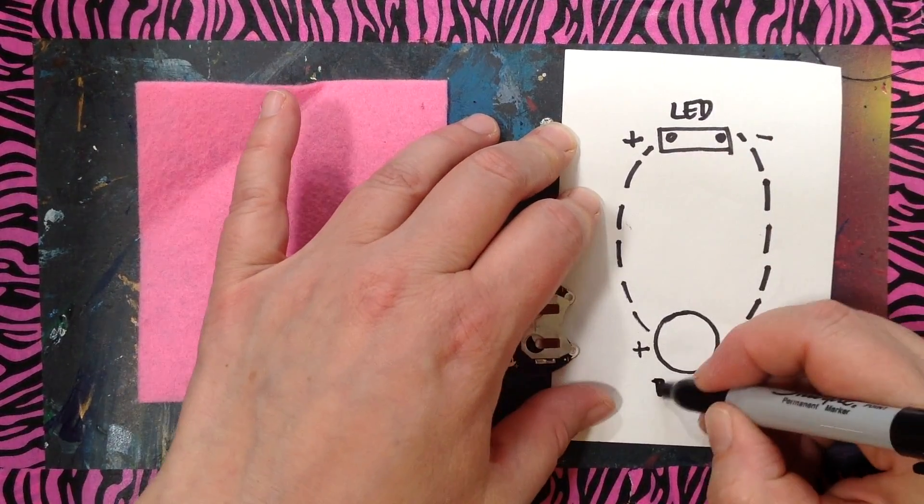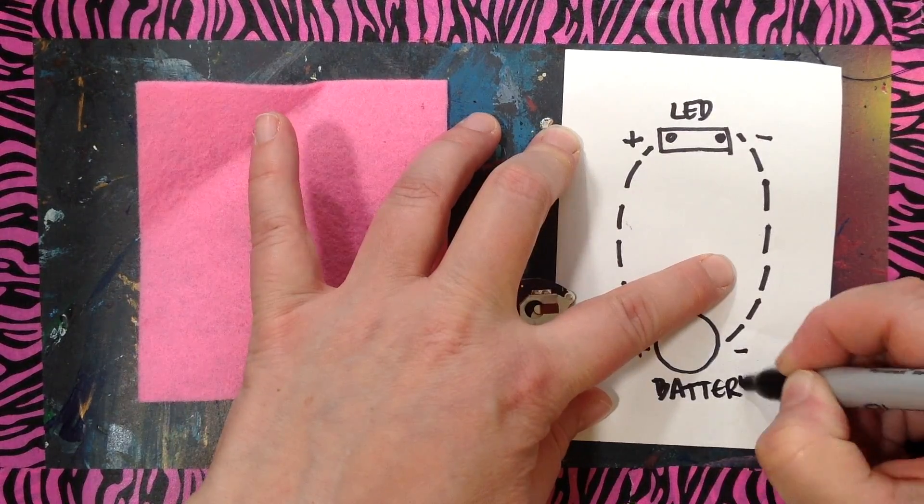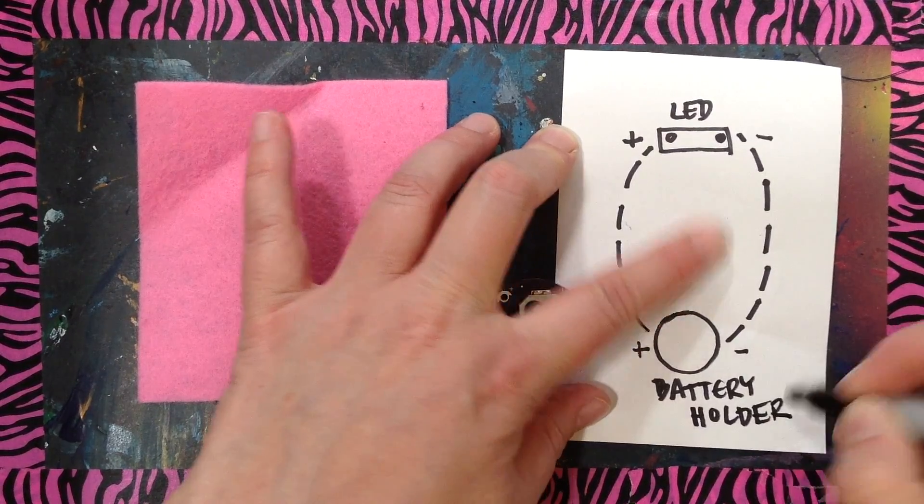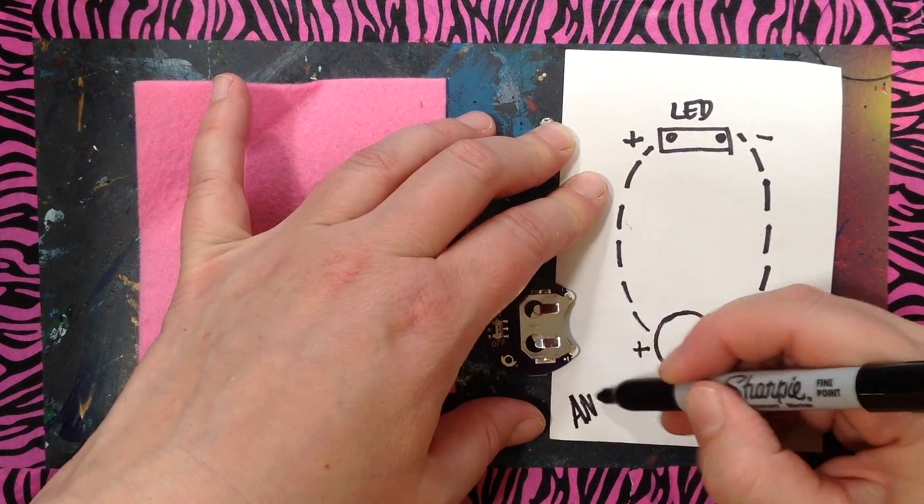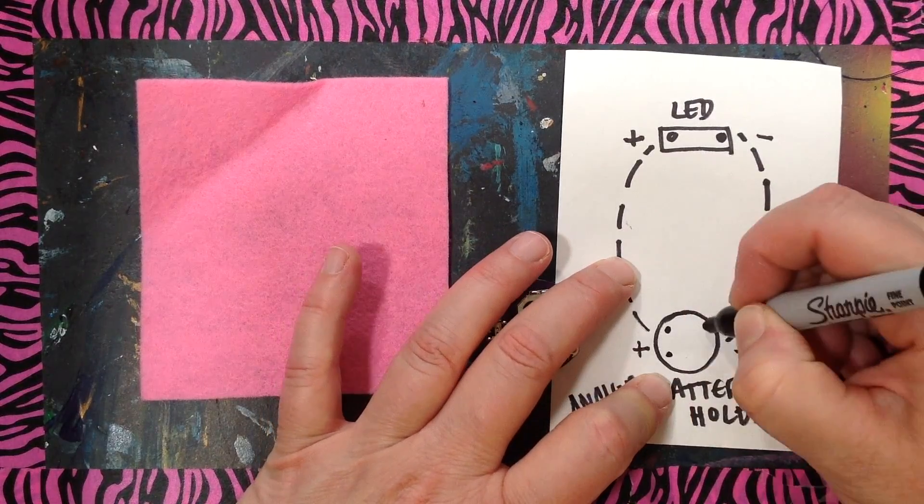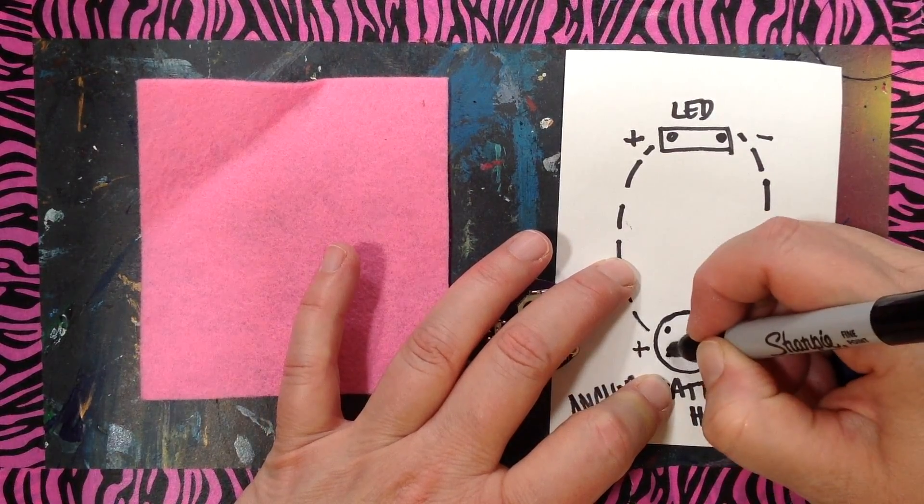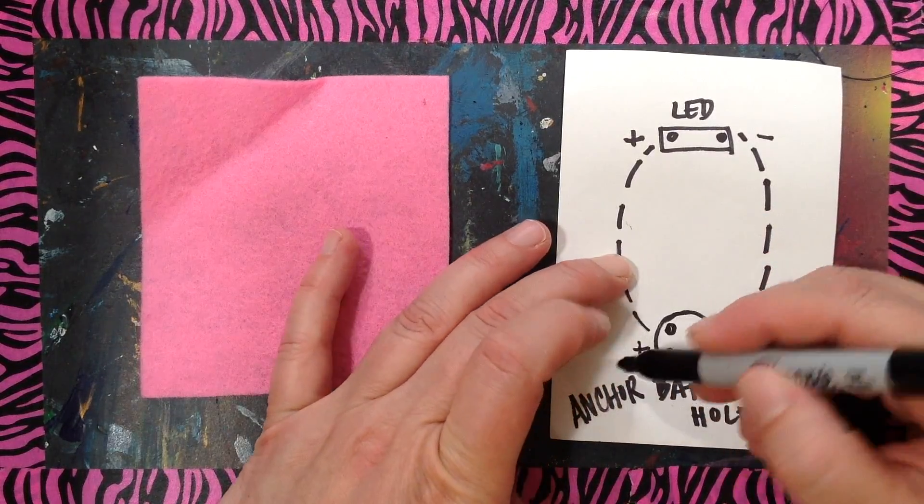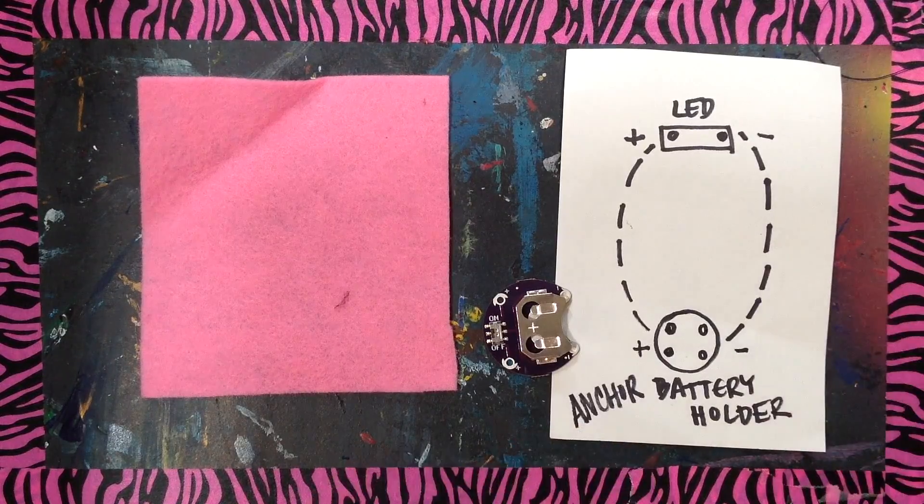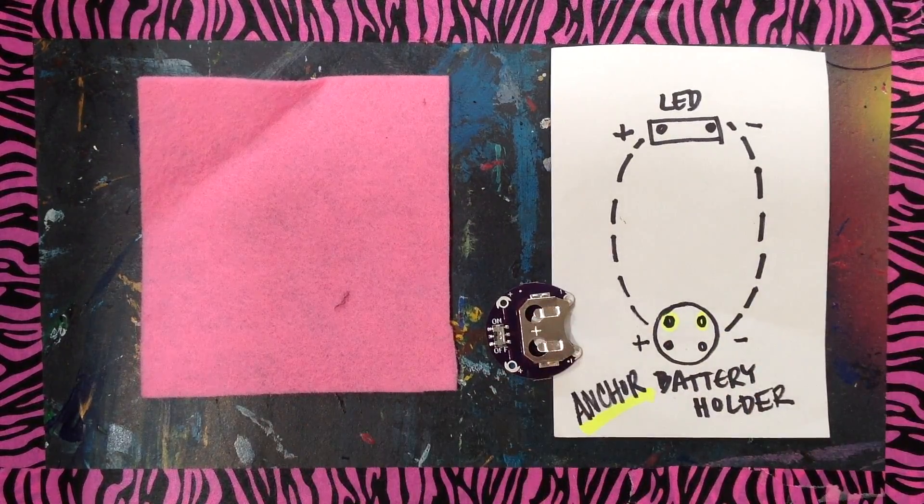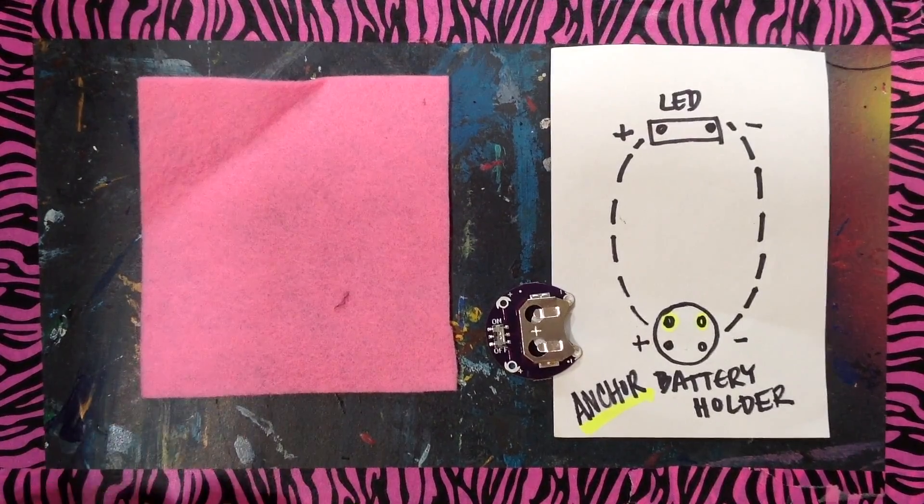And this is the battery holder. And now we need to anchor the battery holder. So there's holes like these little holes here on your battery holder. So I'm going to do the anchoring on this hole and this hole, and that is with your regular thread.